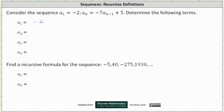Now we'll determine a sub 2. When determining a sub 2, n is equal to 2, which indicates a sub 2 is equal to negative 7 times a sub n minus 1, which is 2 minus 1, giving us negative 7 times a sub 1 plus 5. That is negative 7 times negative 2 plus 5, which is 14 plus 5, which is equal to 19.